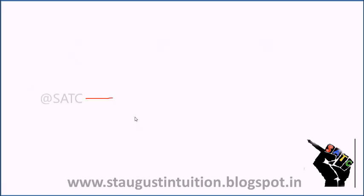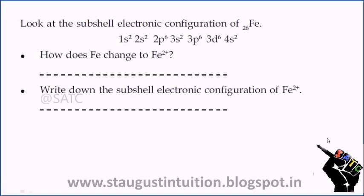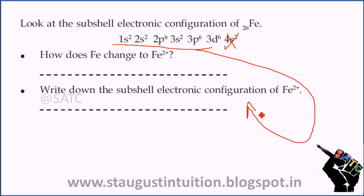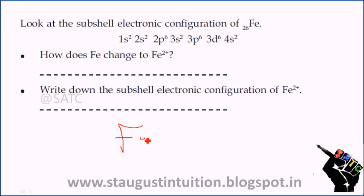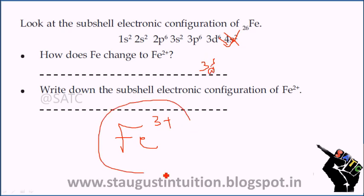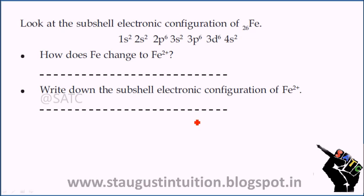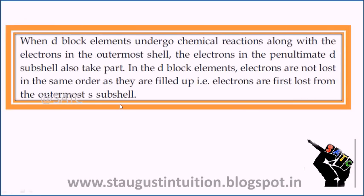If we have Fe2+, two electrons are lost from the S sub-shell. For Fe3+, three electrons are lost. Fe3+ loses one electron from D sub-shell as well. Fe3+ gives a 3d5 configuration. The sub-shell electronic configuration can be determined accordingly.